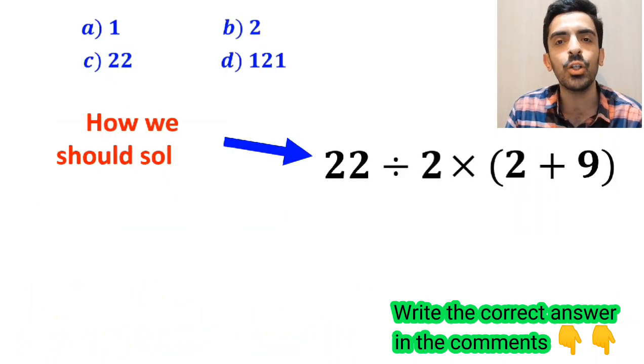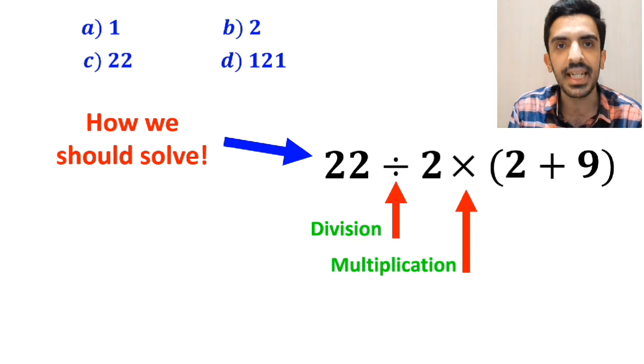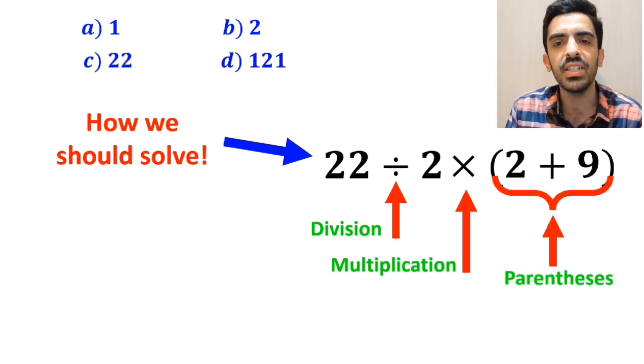All right, now let me explain this step by step how we should solve this expression properly. As you can see on the screen, in this expression we have one division sign, followed by a multiplication sign, and finally parenthesis.